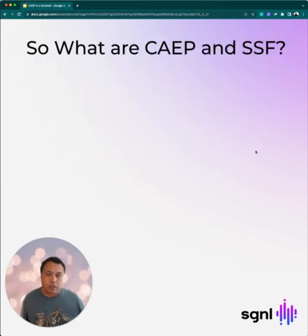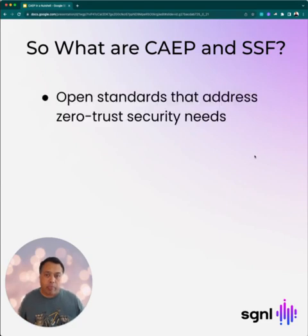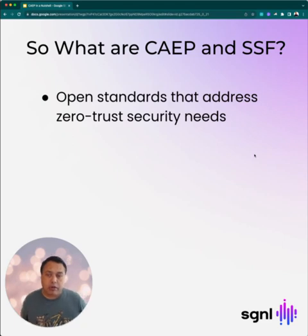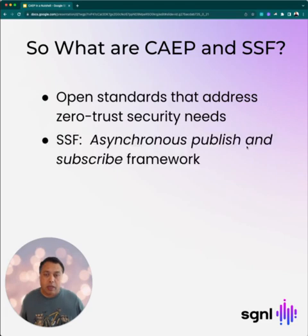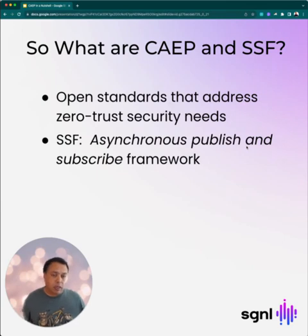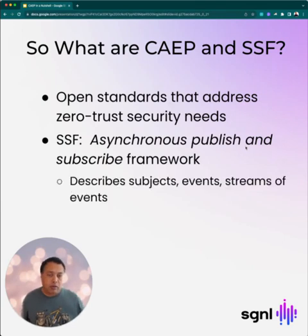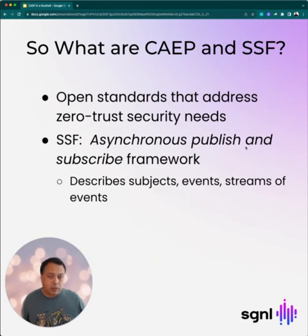So what exactly is CAPE and the Shared Signals framework? These are open standards, and why they're important is that they address the basic needs of any zero-trust security implementation. The Shared Signals framework is an asynchronous publish-and-subscribe mechanism that defines things like how you identify a subject, and everything communicated is in terms of events using security event tokens. They also define how to control streams.